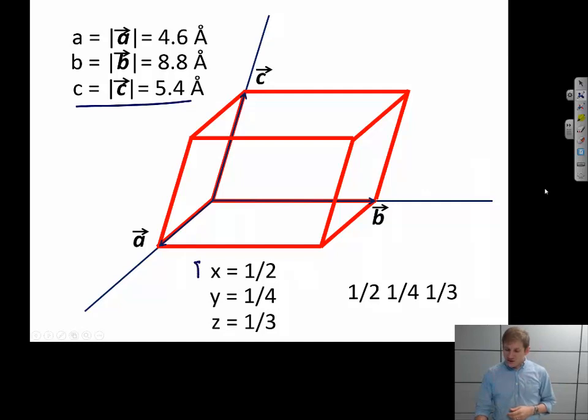But I'm also giving you, in this example, the fractional position of this point. So usually this would just be written one-half, one-quarter, one-third. Or sometimes it's written separated out. X equals one-half, Y equals one-quarter, Z equals one-third.